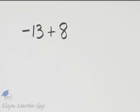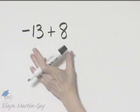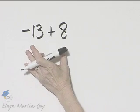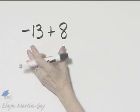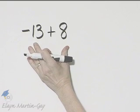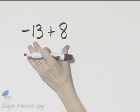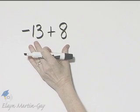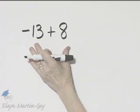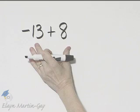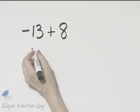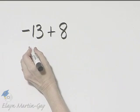Let's simplify this expression — to do so we will add. Notice we're adding two numbers with unlike or different signs, so we subtract their absolute values. I'll go ahead and write that down.